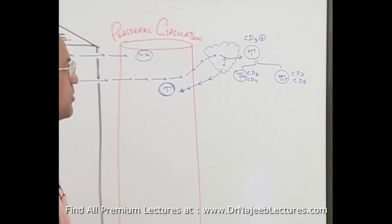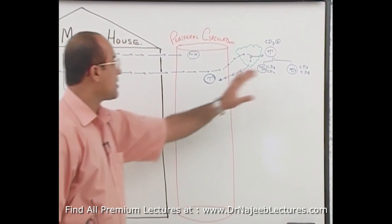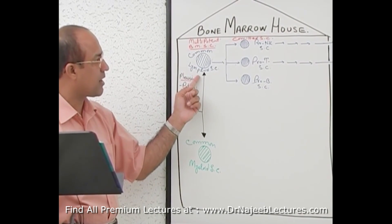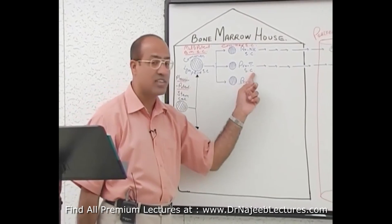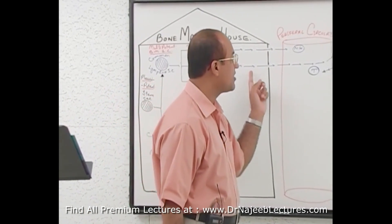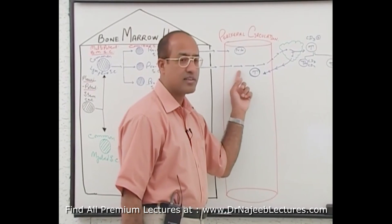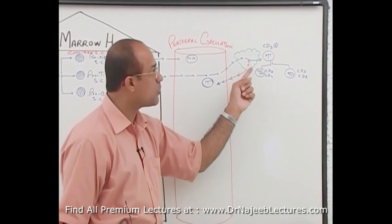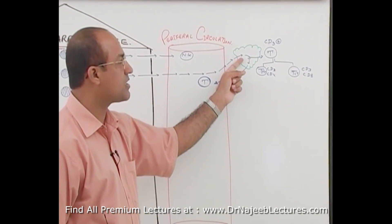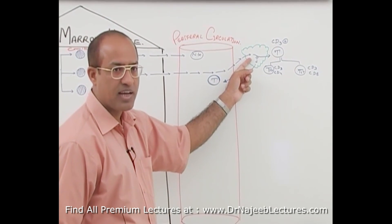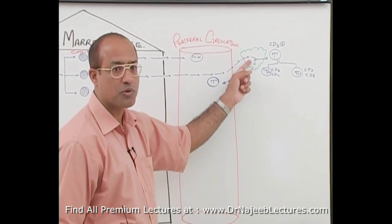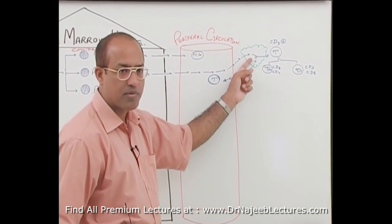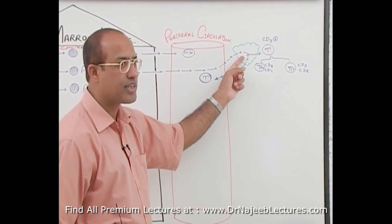From the bone marrow, the pluripotent stem cell divides into the common lymphoid stem cell, from which we get pro-T stem cells. These pro-T cells produce immature T cells that go into the thymus, where they are trained to express T cell receptors as well as CD4 or CD8 proteins, becoming fully functional T cells.